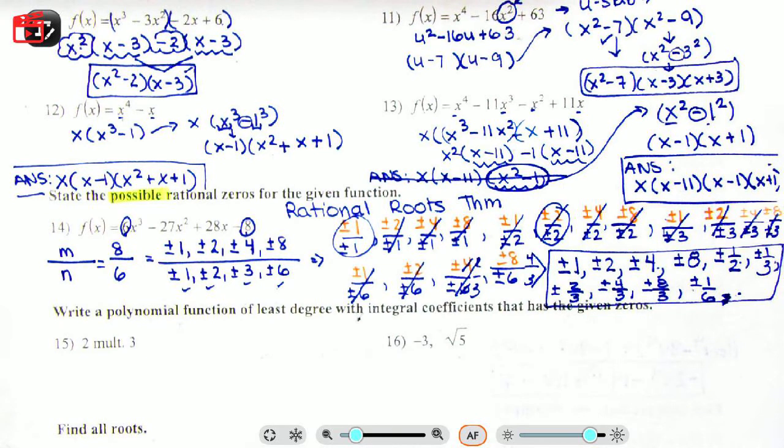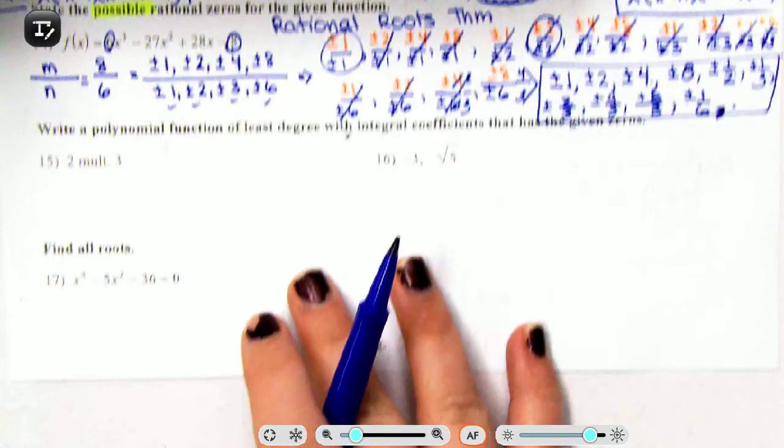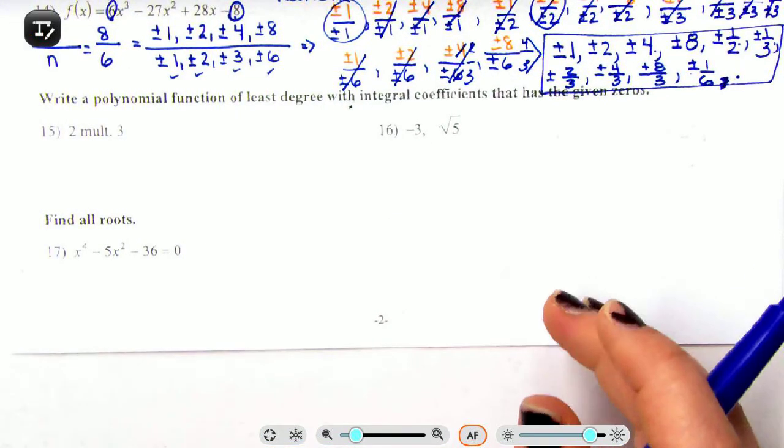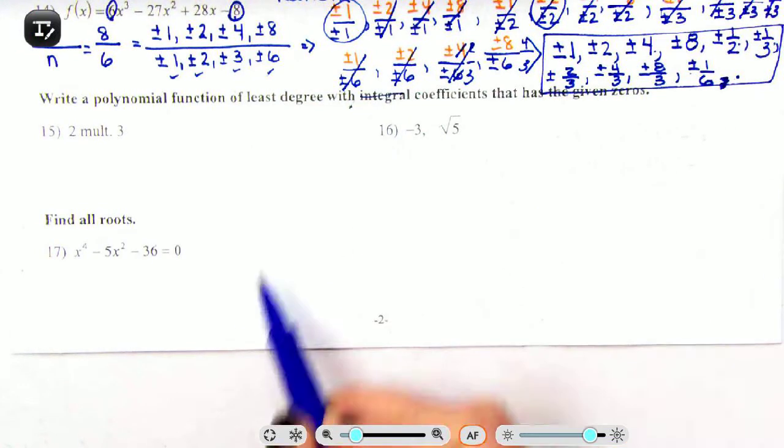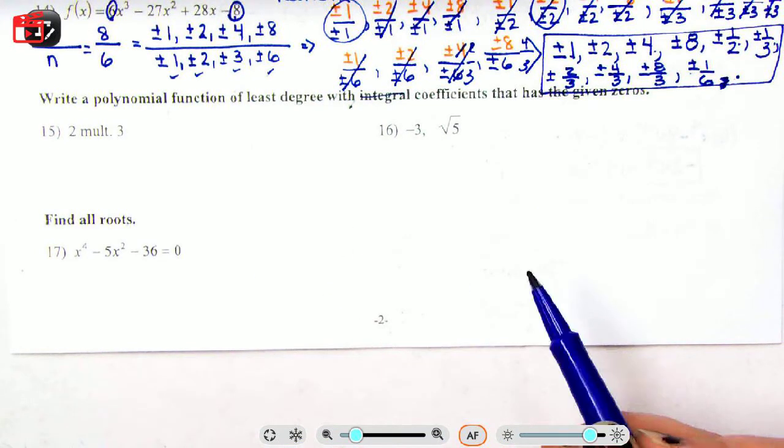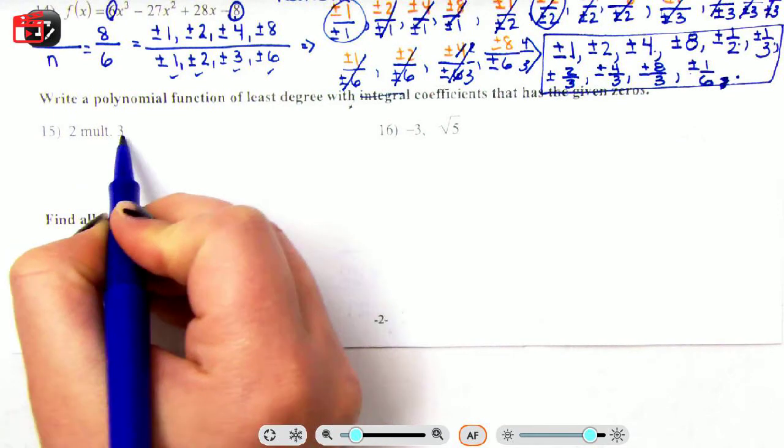Alright, I'm gonna shift this up. Write a polynomial function of least degree with integral coefficients. This should say integral, meaning integer coefficients. Here's the thing: multiplicity of three.